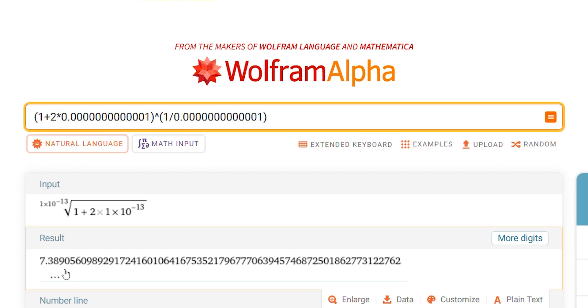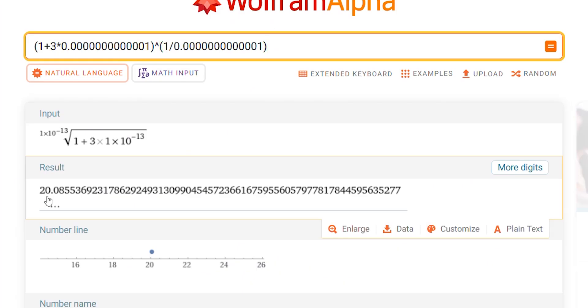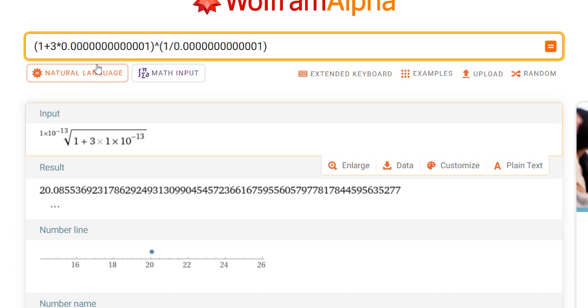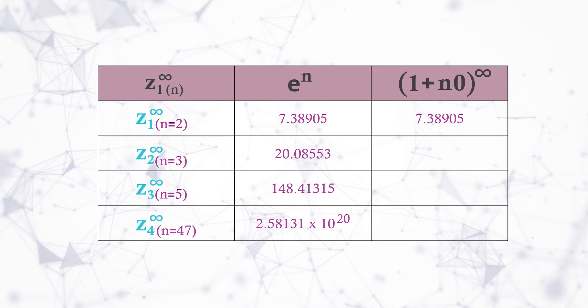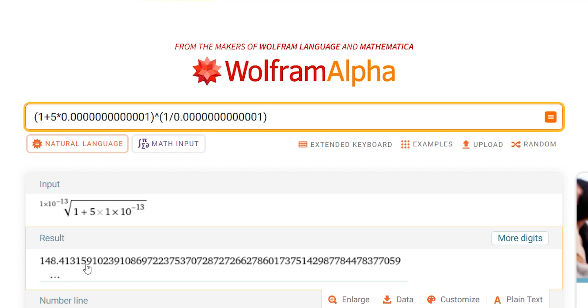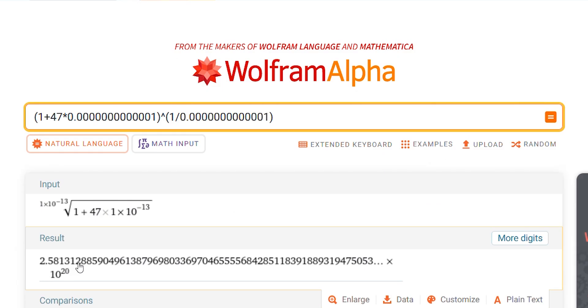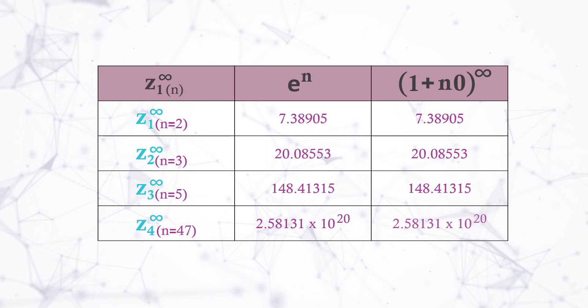Z₁ = 7.38905, which we will add in this table. Similarly, we got z₂ = 20.08553, which we will add here again. Z₃ = 148.41315. Z₄ = 2.58131 × 10²⁰.